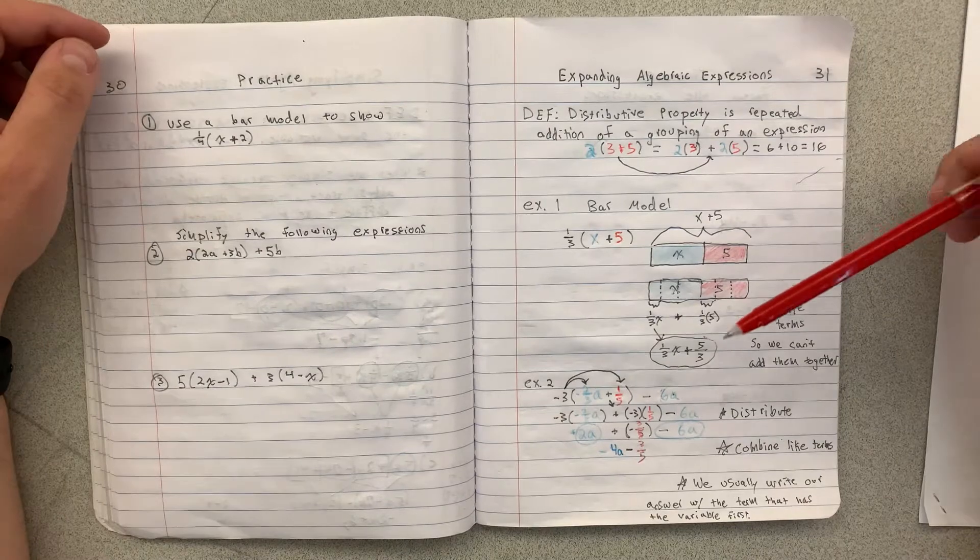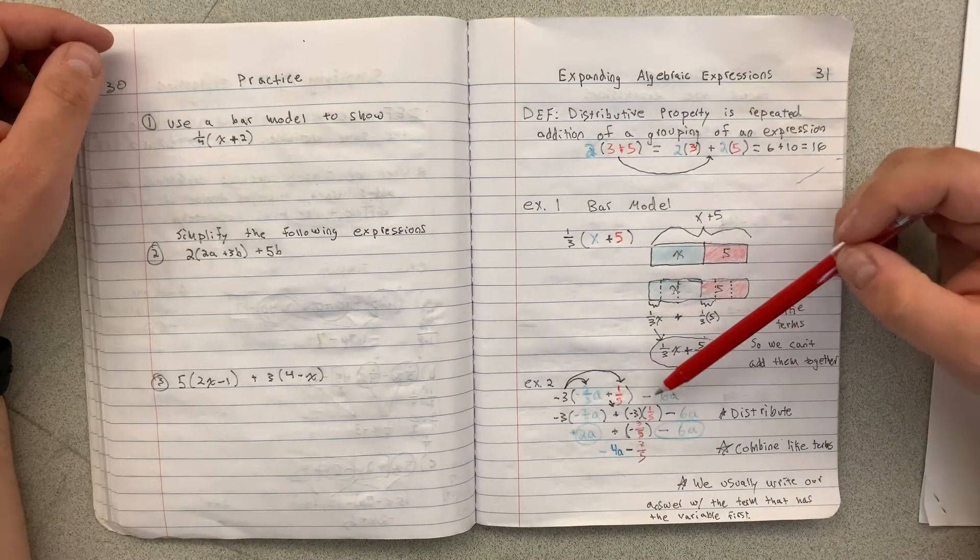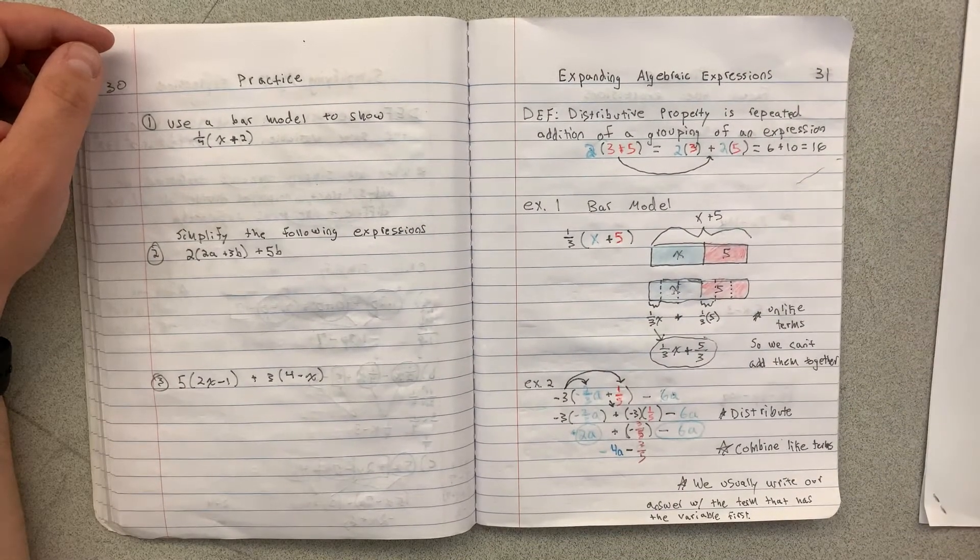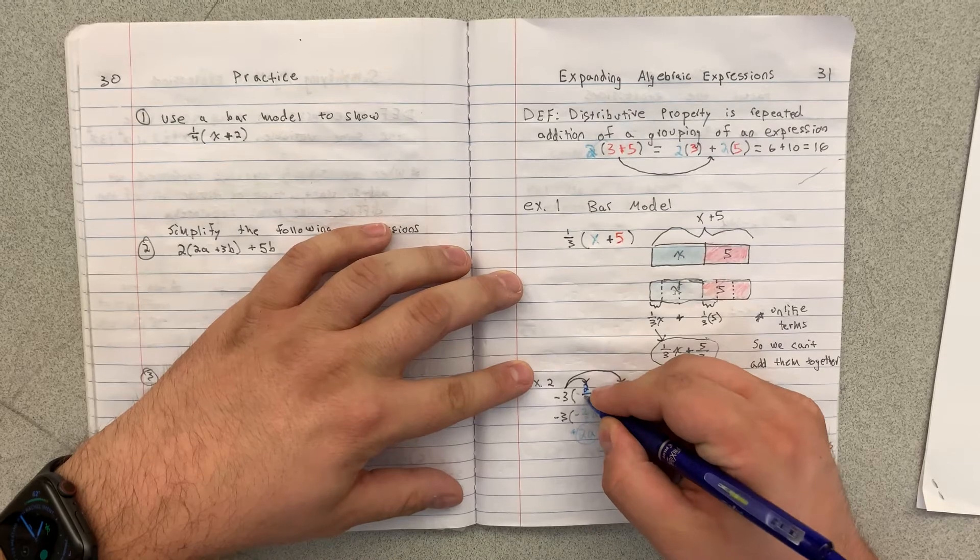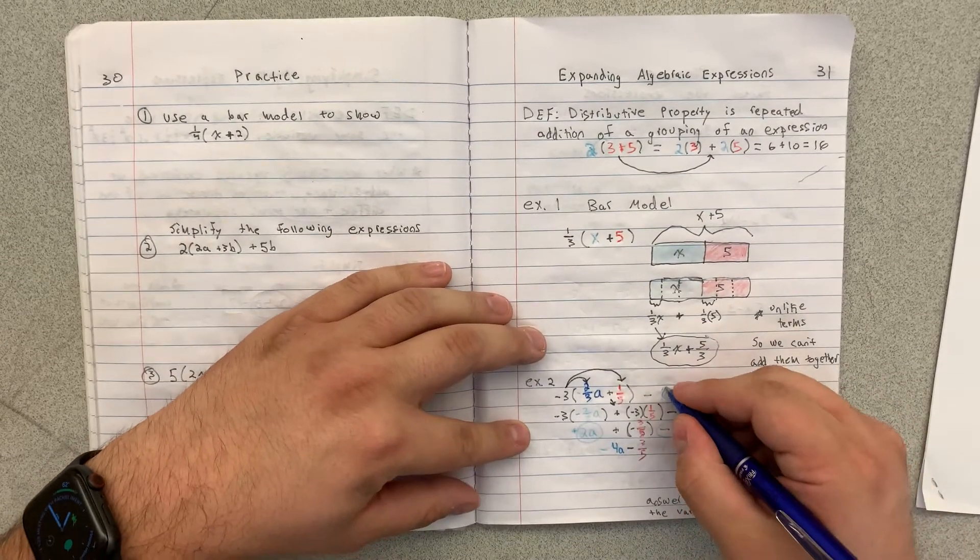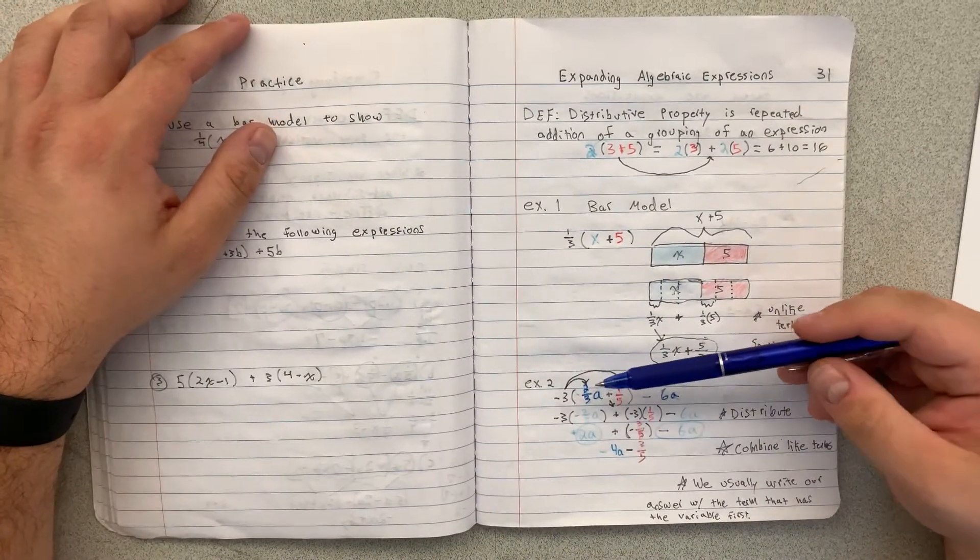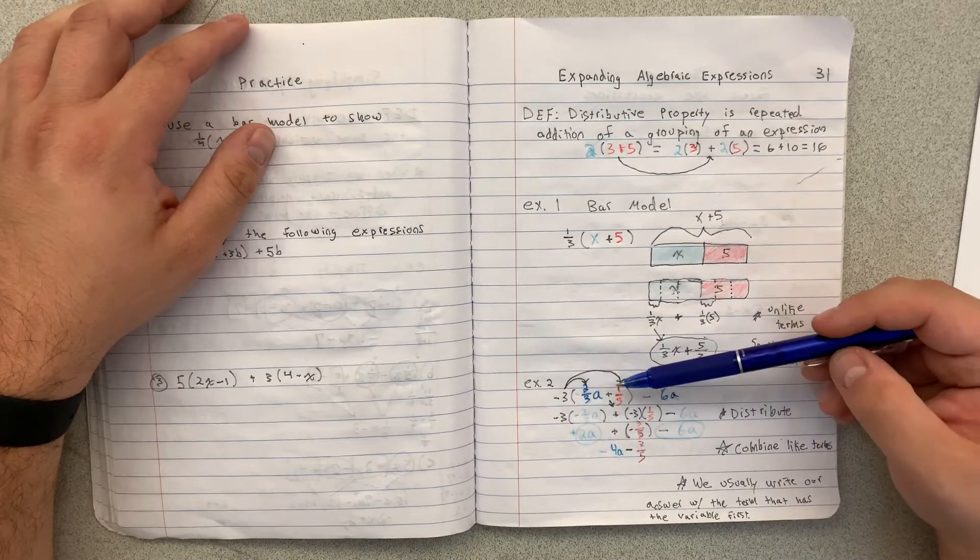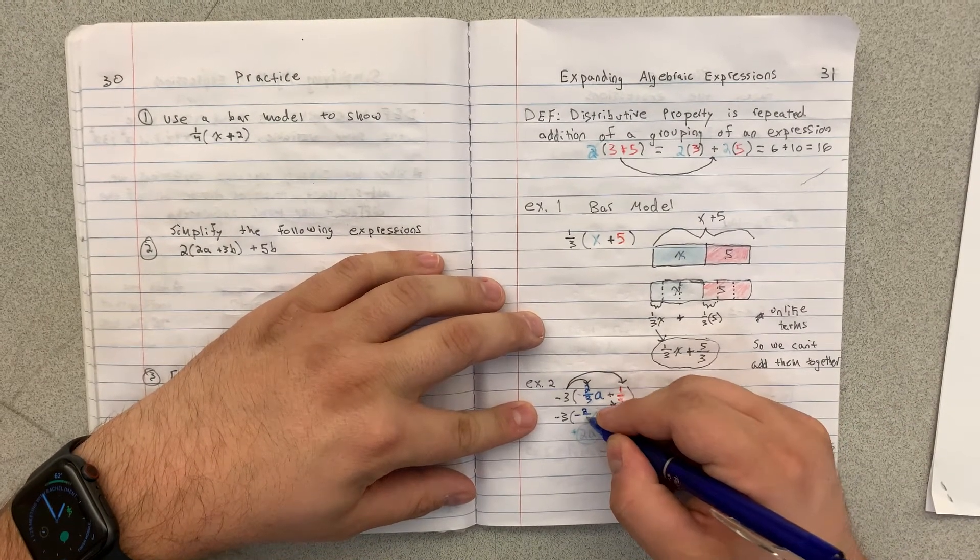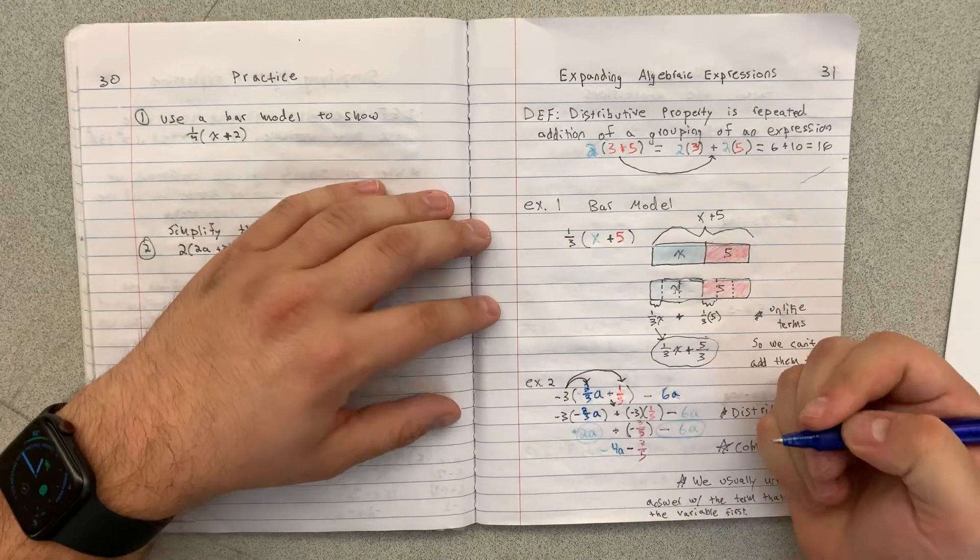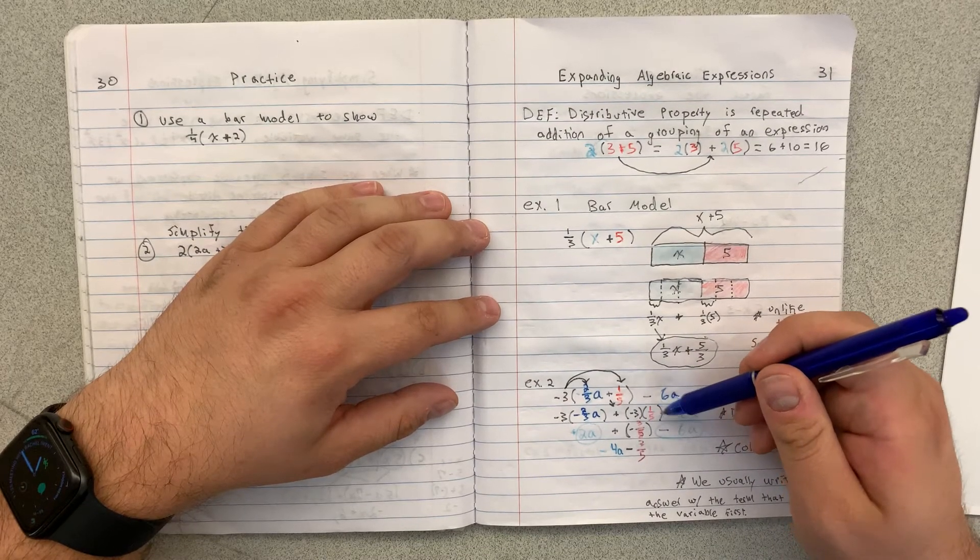Last example is negative 3 times negative 2 thirds a plus 1 fifth and then minus 6 a. So my first step is going to be to distribute. And let me make this kind of bolder so you can see that it's 2 thirds a and 6 a. So I can distribute just like a normal fashion. So I'm adding negative 3 times negative 2 thirds a, negative 3 times 1 fifth, and then minus 6 a.